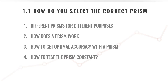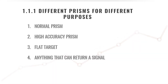Let's look at the different prisms for different purposes. We've listed four different types. The first is the normal prism — this is typically the prism that comes with your turtle station, with a plus or minus 30 millimeter prism constant. Then you get your high accuracy prisms, which are a bit smaller with prism constants of about plus or minus 17 millimeters, typically used for construction sites or highly accurate work.